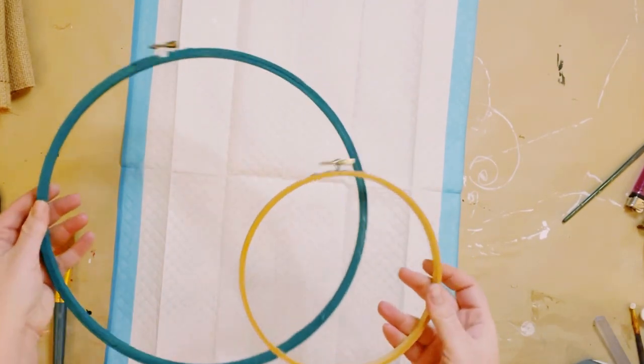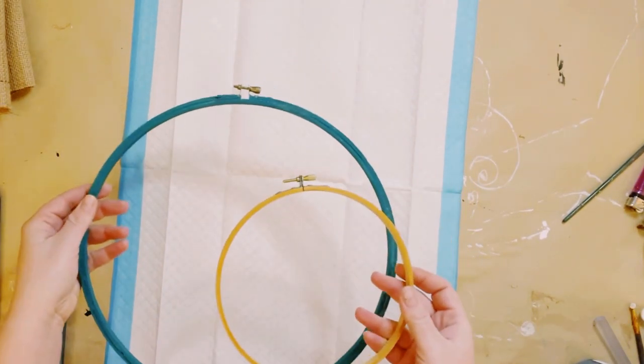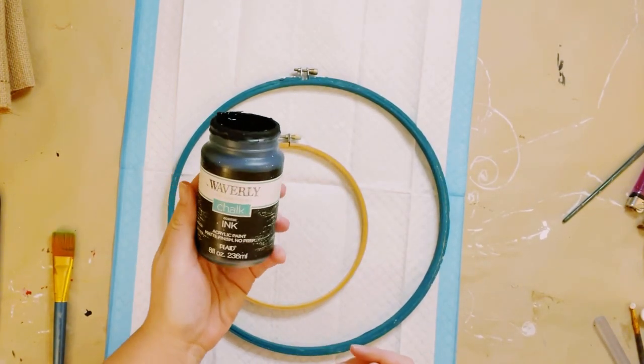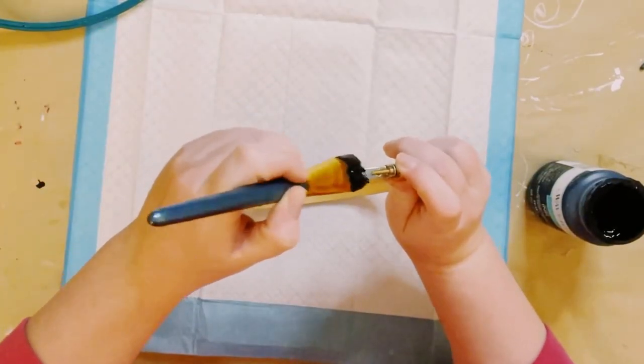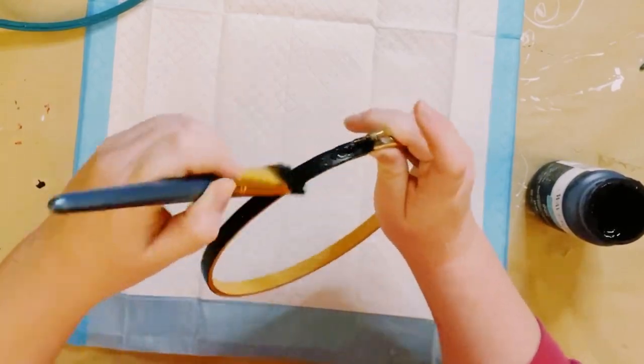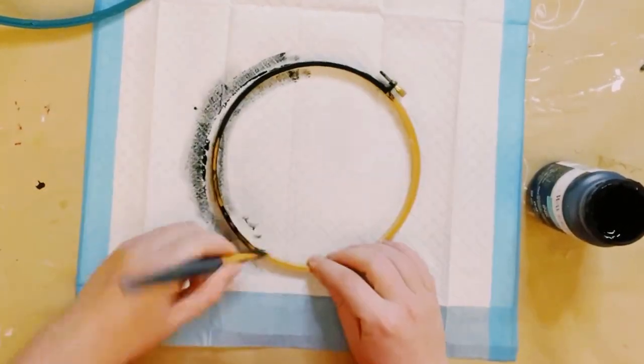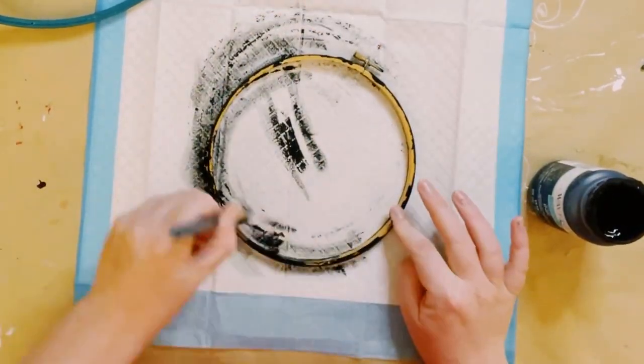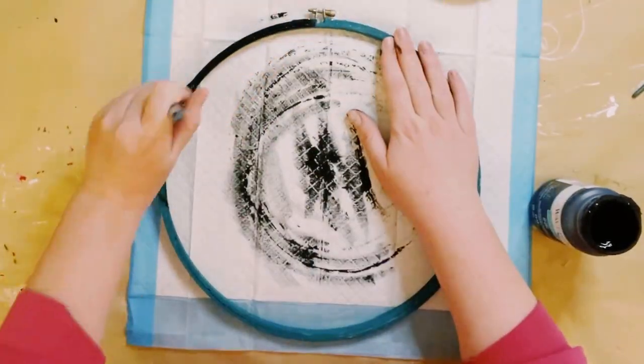I'm starting off with two different sized embroidery hoops. This part is completely optional, but since these are two different colors, I did decide to paint mine. I'm using Waverly Chalk Paint in the color ink, and I'm just painting both of these embroidery hoops inside and out.